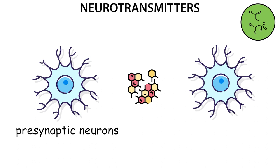Neurons that release neurotransmitters are called presynaptic neurons. Neurons that receive neurotransmitter signals are called postsynaptic neurons.